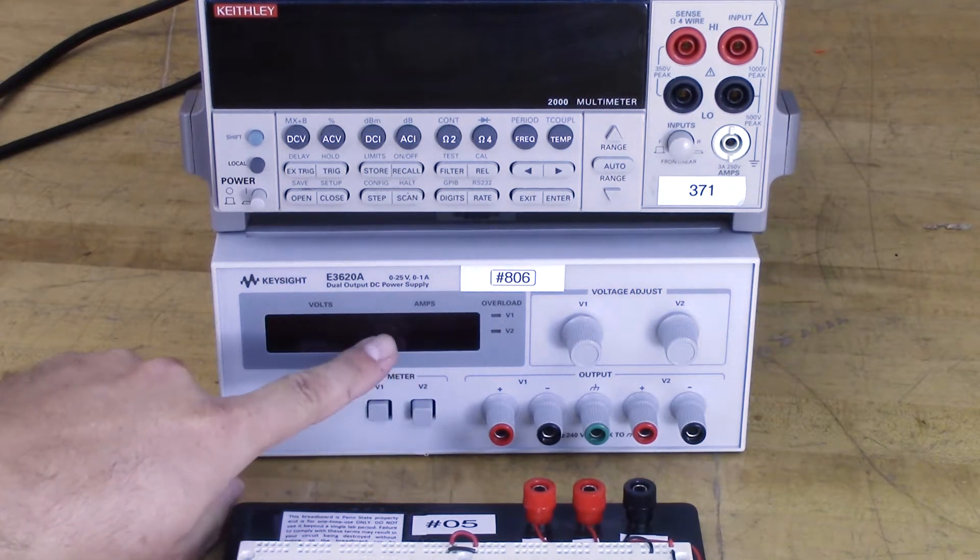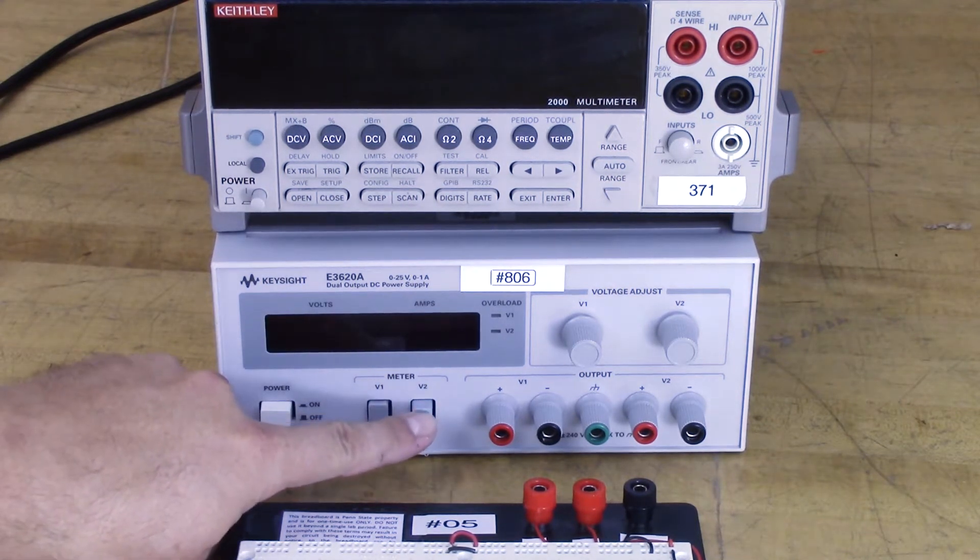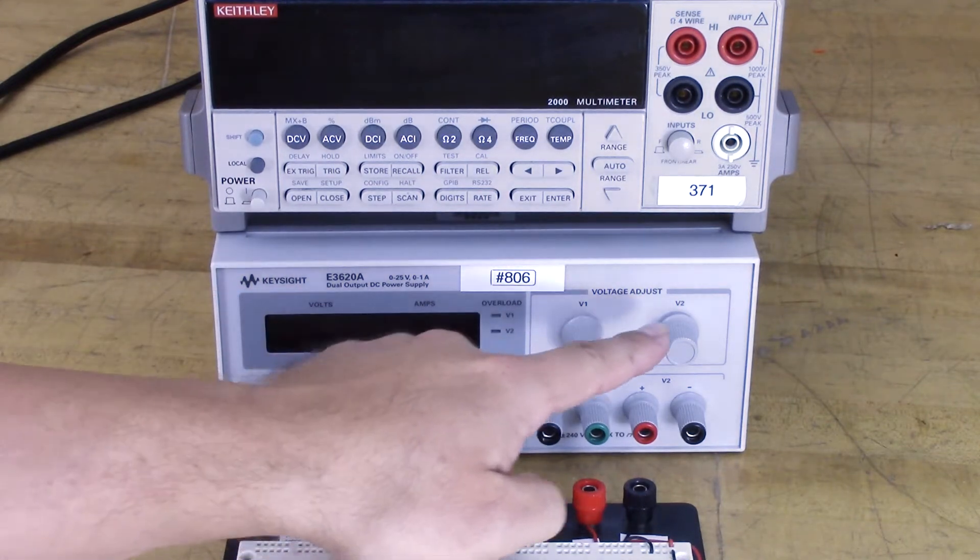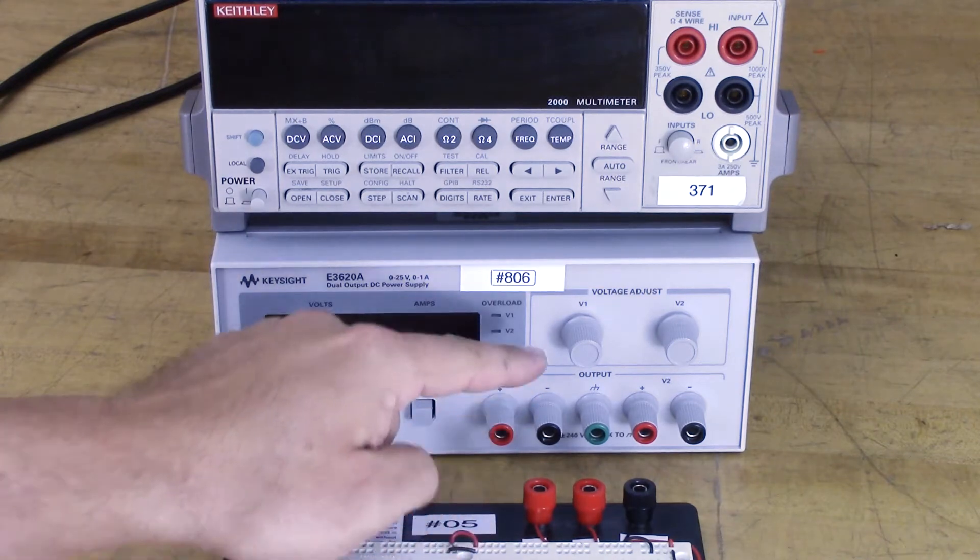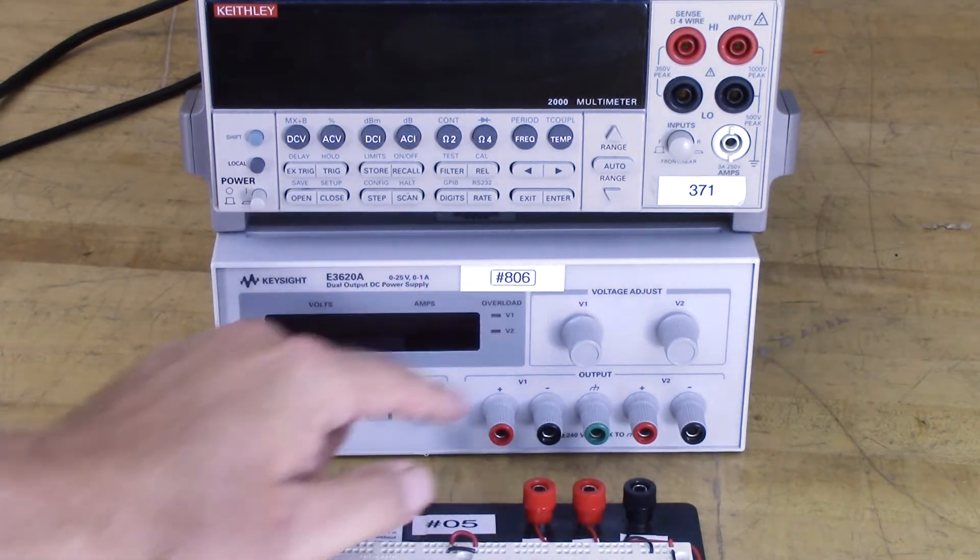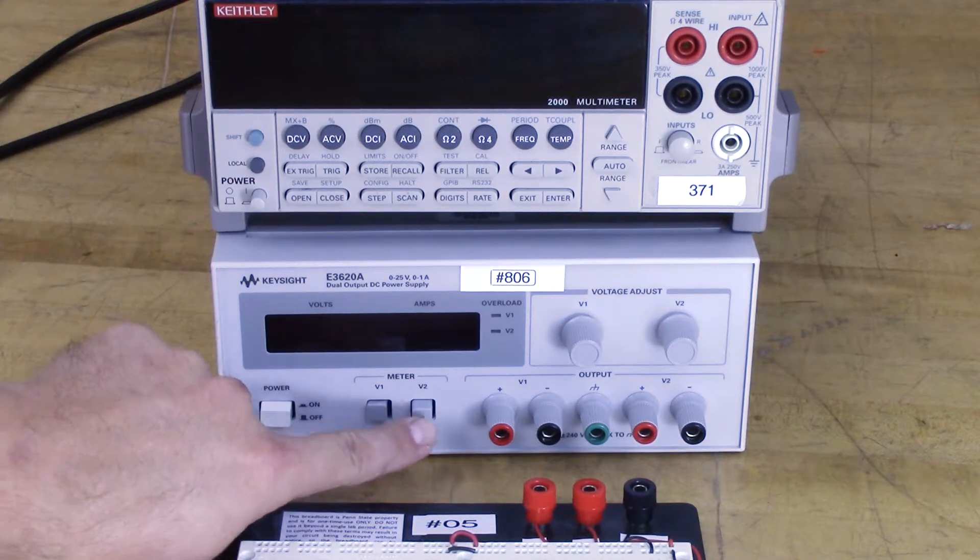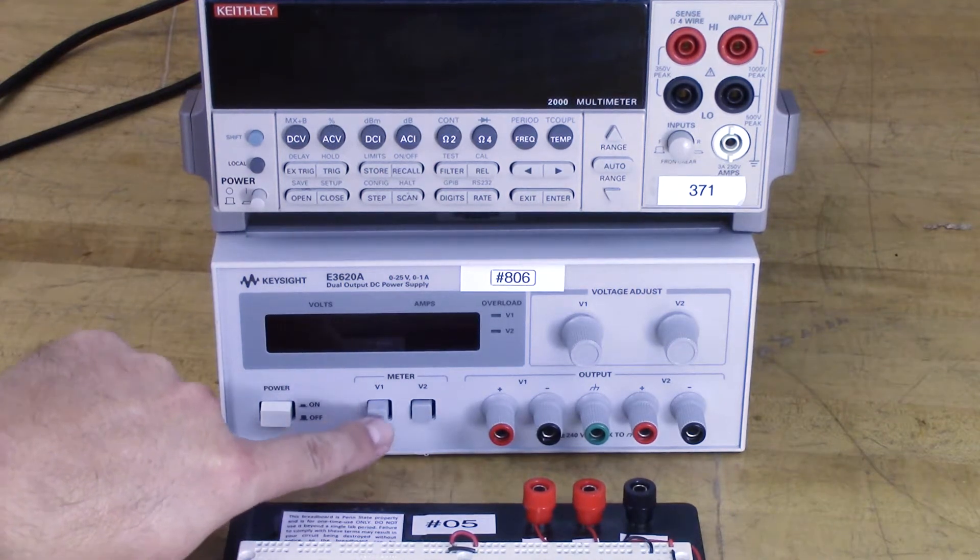This one selects what's displayed on here: volts, voltage. And this is how you change the voltage. So the V1 corresponds to V2. So if you want to change the voltage of these wires, use this dial, and you press this button. In is on, and out is off.